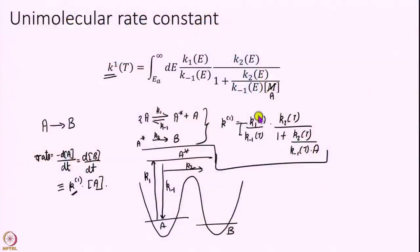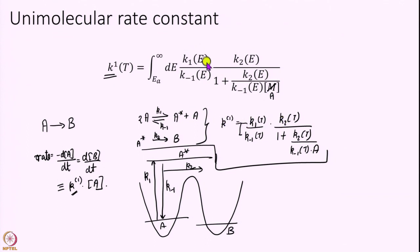Instead of writing this as a constant, we write it as a function of energy — the same quantity — and integrate over all possible energies above the barrier height. EA is again the barrier height. Below, if E is less than EA, no reaction will happen, so we integrate over all energies greater than the barrier height. The question becomes how do I calculate K1, K-minus-1 and K2. Rice, Ramsberg and Kassel had given a recipe to calculate this, and that is what we will discuss today.